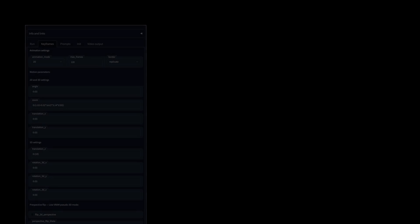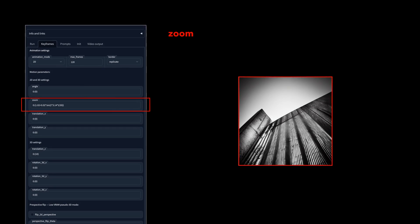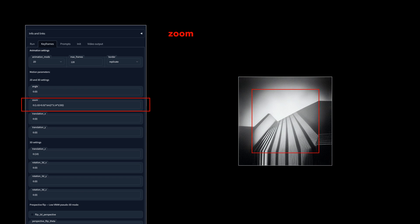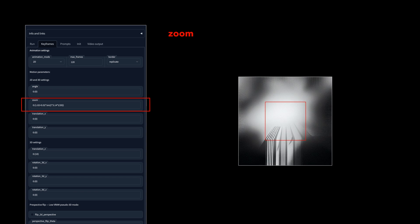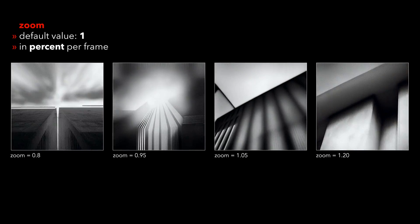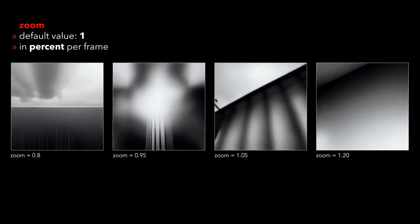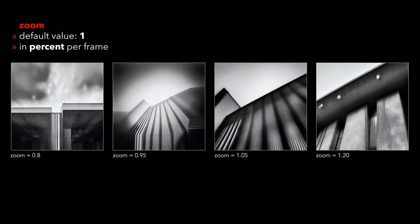With the zoom parameter, we can zoom in or out of the canvas by percent per frame. The default value here is 1, which stands for 100%, and will result in no zoom effect. Everything below 1 will zoom out, and everything above 1 will zoom into the canvas. If, for example, we take 1.05 as a value, we will be zooming in by 5% per frame.